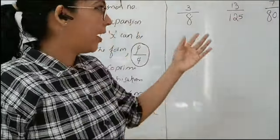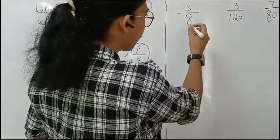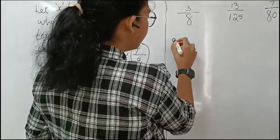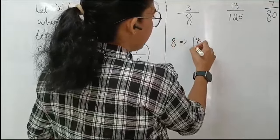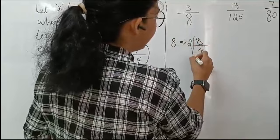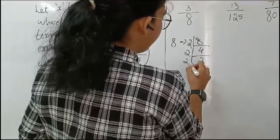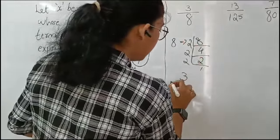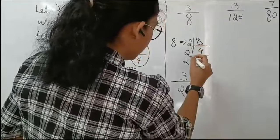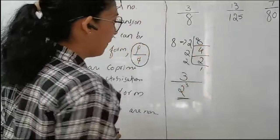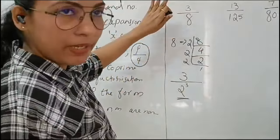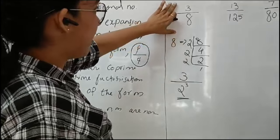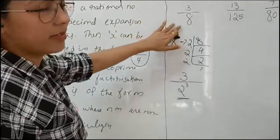Let me explain with some examples. First: 3 by 8. We know that 3 is a prime number. On factorization of 8, we get 2 times 2 times 2, which is 2 to the power 3. So this number can be represented as 3 divided by 2 to the power 3. As per this theorem, 3 by 8 is a rational number whose decimal expansion terminates.